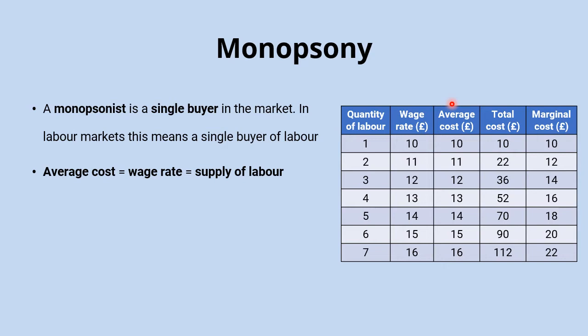If the average cost is equal to the wage rate, that's also equal to the supply of labour, because we plot our supply curve for labour with quantity of labour along the x-axis and the wage rate up the y-axis. We have that upward sloping supply curve equal to the wage rate. So the average cost equals the wage rate equals the supply of labour.